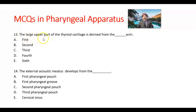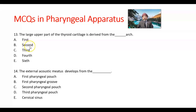Question number 13. The large upper part of the thyroid cartilage is derived from which arch? It is derived from the fourth arch. The answer is D.